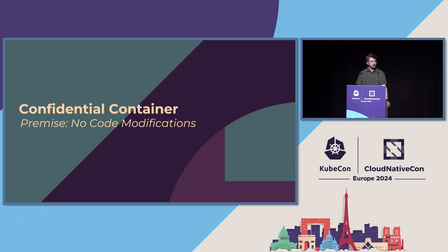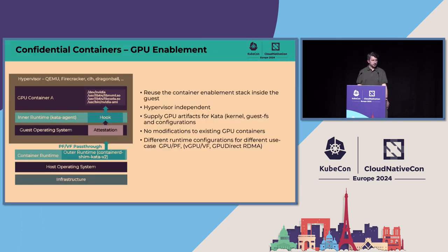Now we have the PCI topology in the VM, the confidential GPU, and Kata as the runtime — all of which leads us to confidential containers. The same premise applies: we don't want any code modification for confidential containers either. We use the very same enablement stack. It's hypervisor independent, and we supply the confidential parts for the GPU artifacts as well.